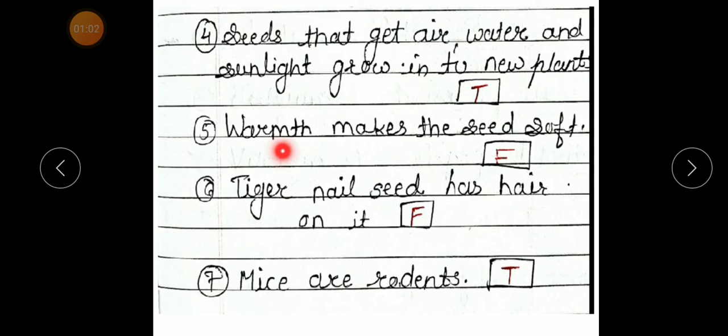Number 5. Warmth makes the seeds soft. False. F for false. Number 6. Tiger nail seed has hair on it. F, false.